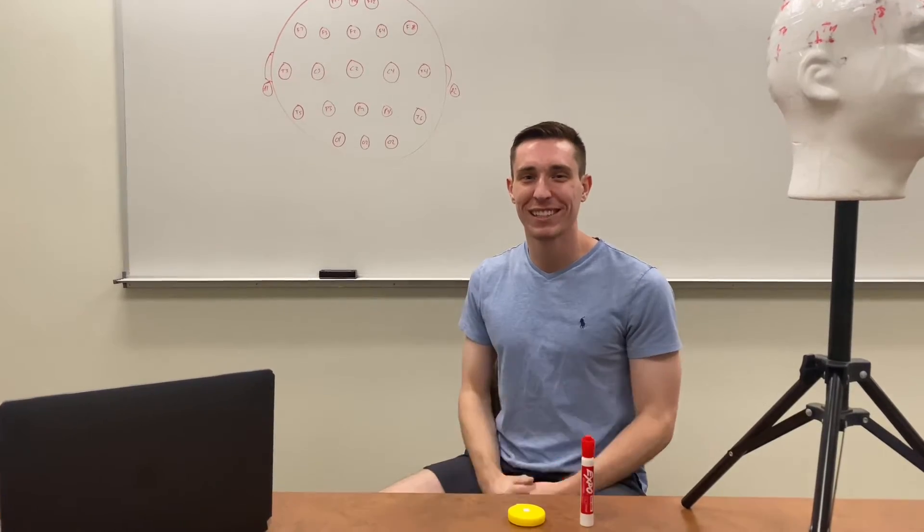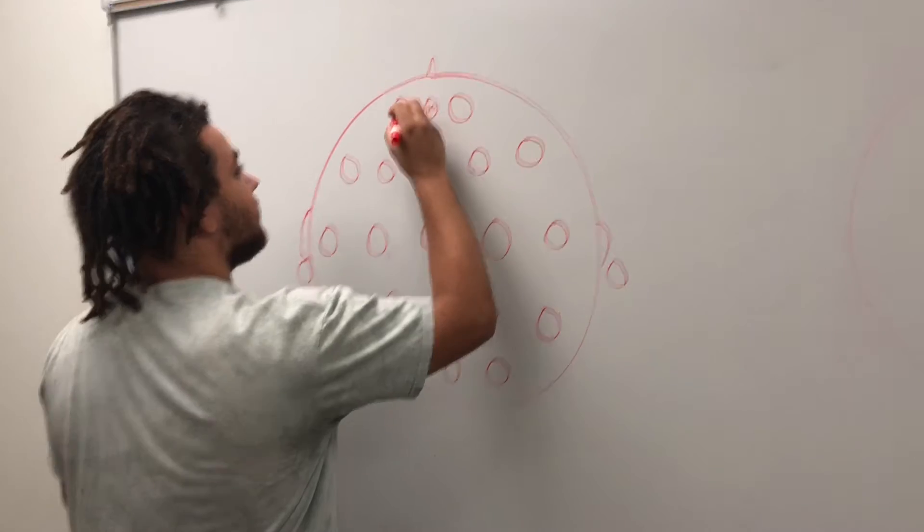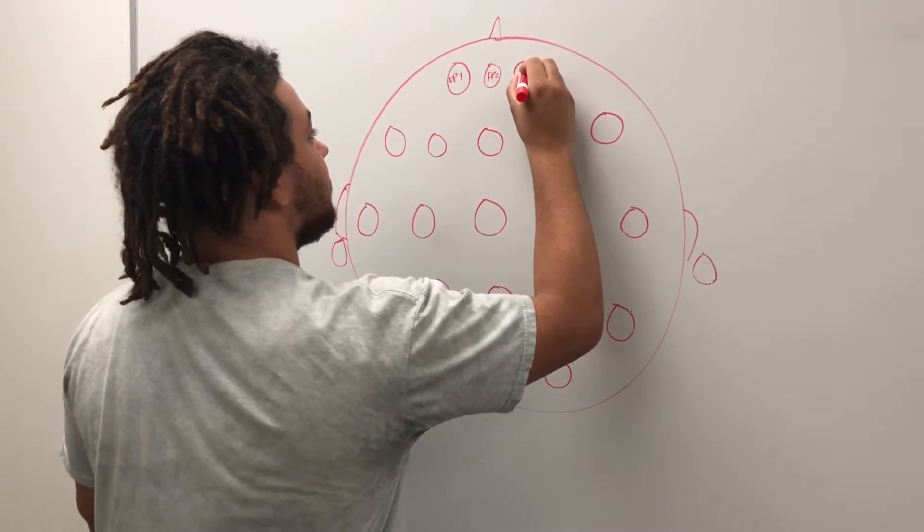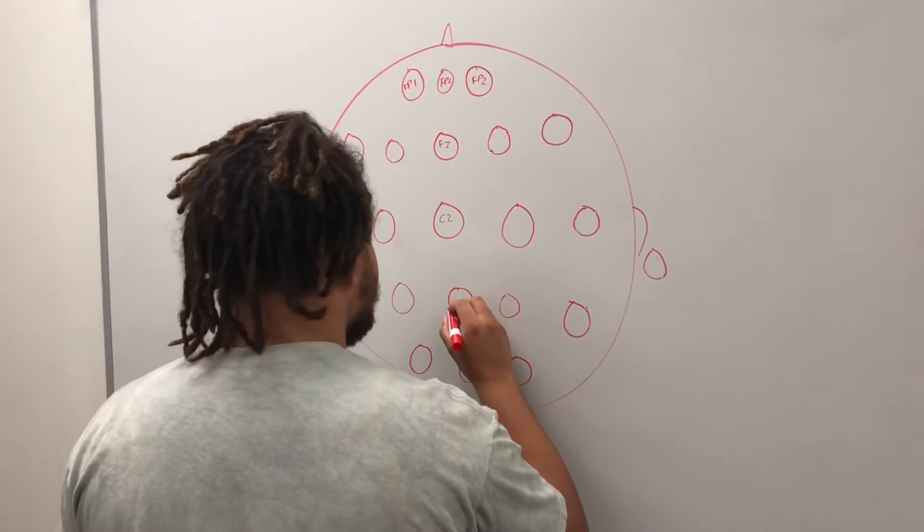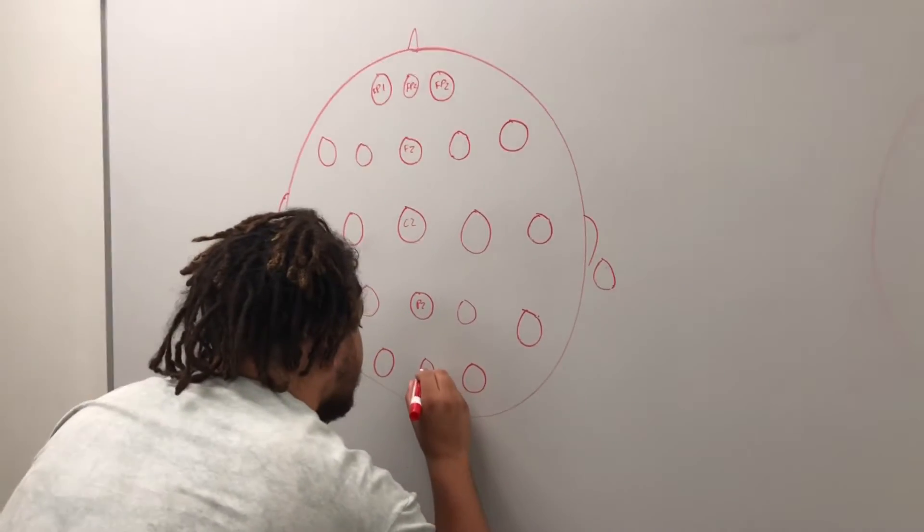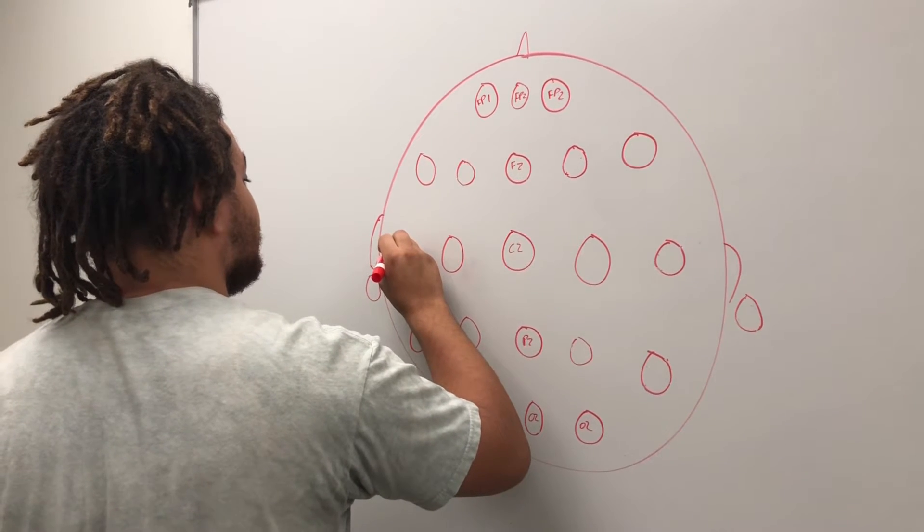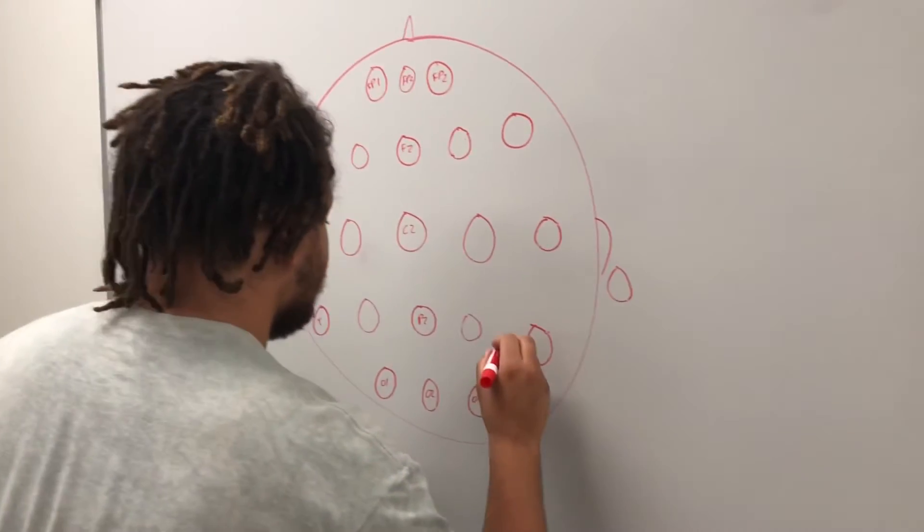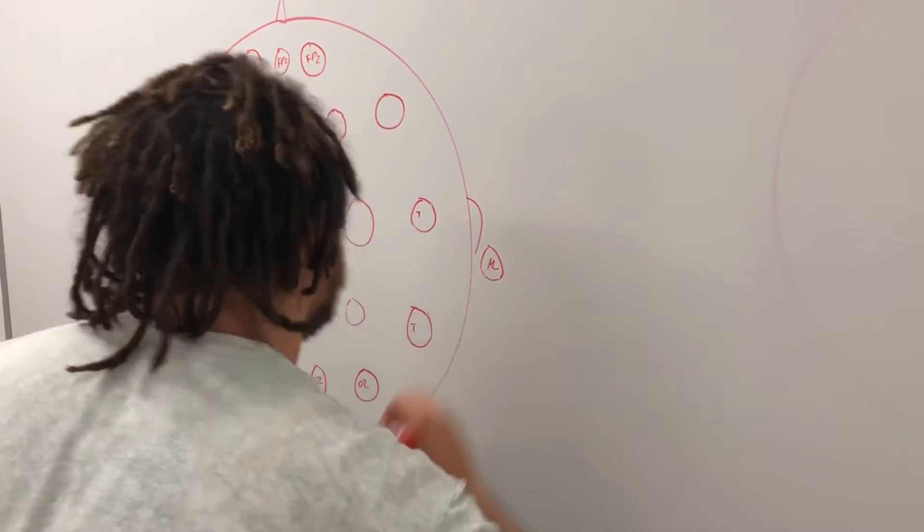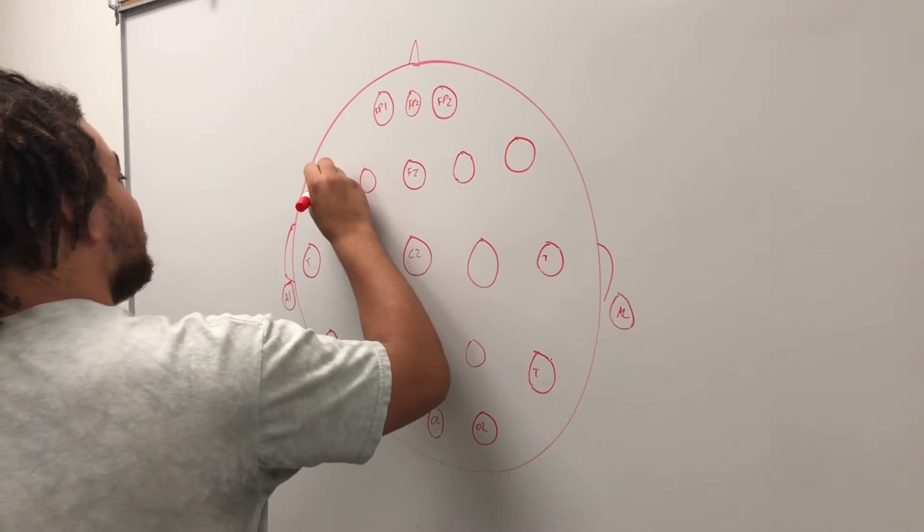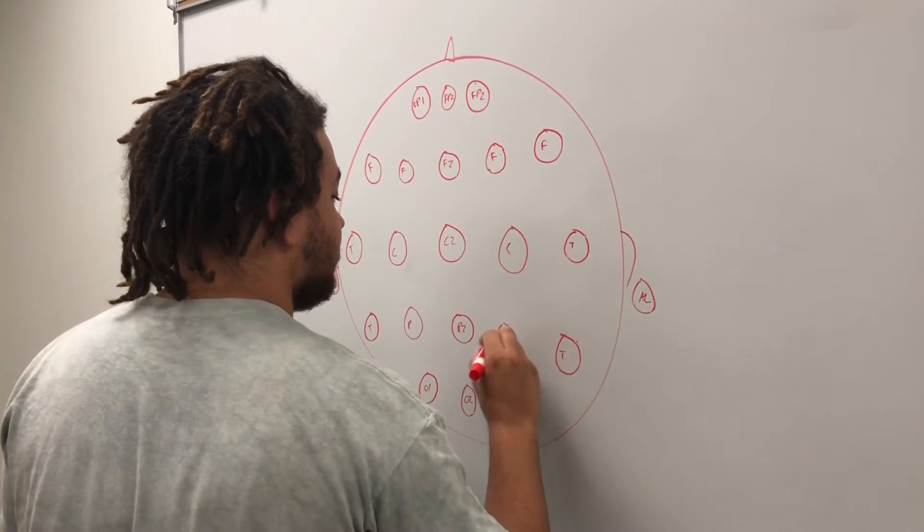You got it, Z's down the middle. O1, O2. Good, I got your temporals. A little A1 behind the ear. Okay, and we'll finish these off. You gotta get your letters down - the frontals, C's, P for parietal.